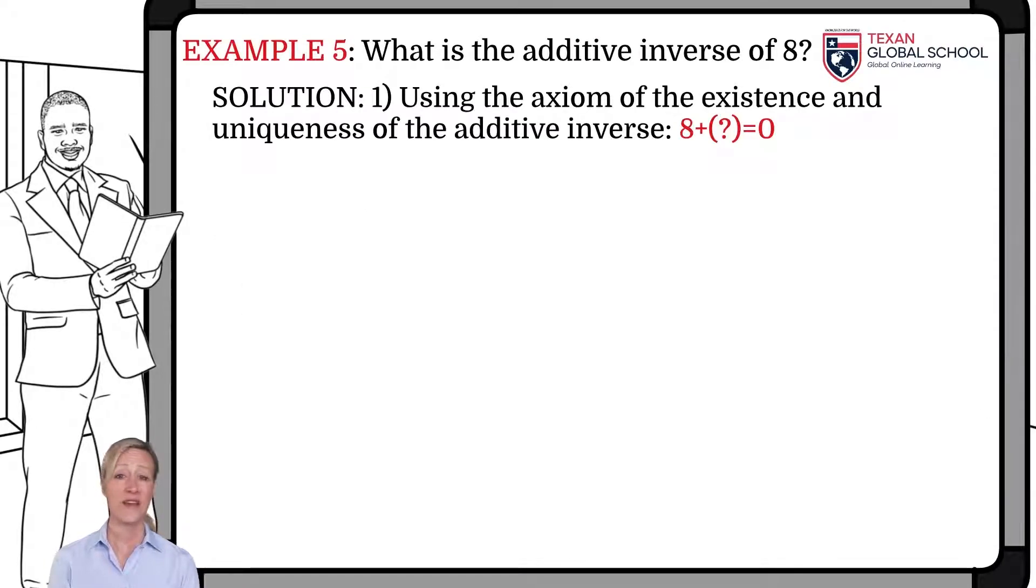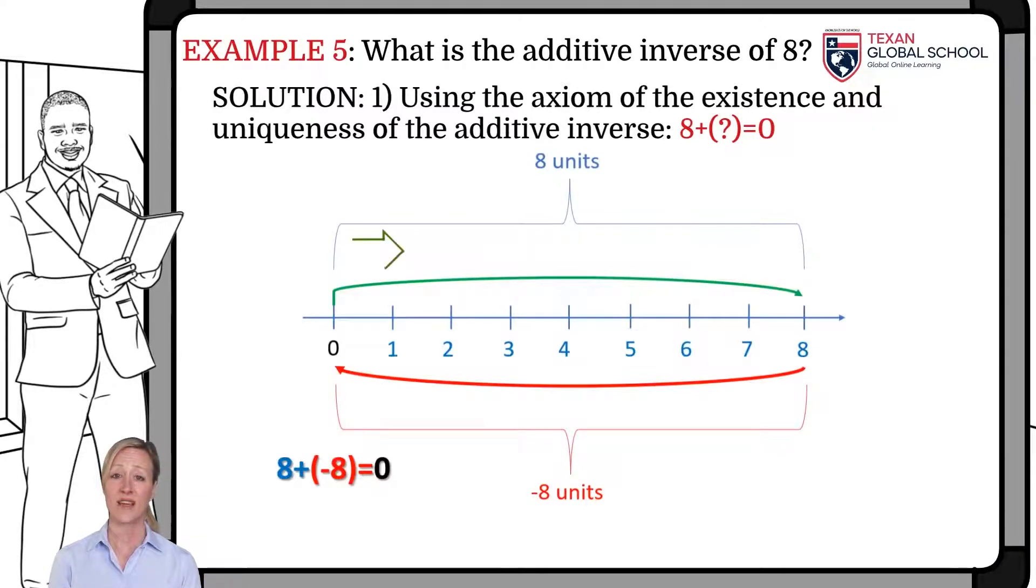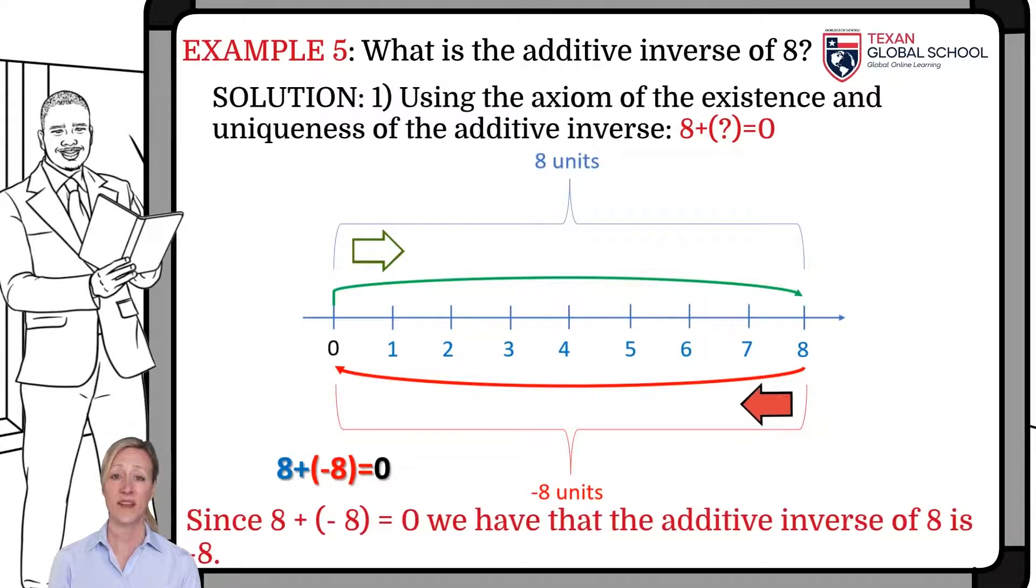In this last example, we are asked to find the additive inverse of 8. As we can see, the additive inverse of 8 must be the number that when added results in 0. As we can see on the number line, we advance 8 units, and then return those same 8 units, thus obtaining 0. So the additive inverse of 8 is negative 8, since 8 plus minus 8 results in 0. This axiom is the basis for subtraction. Actually, what we will do is add the additive inverse of a number while subtracting.